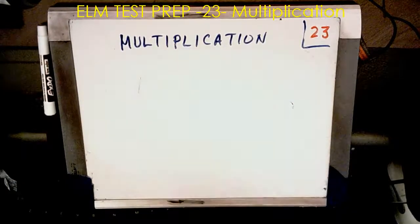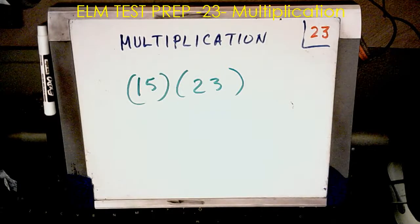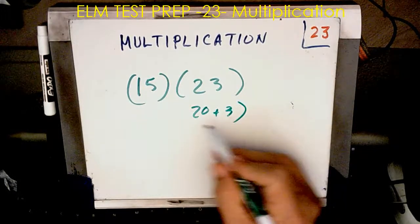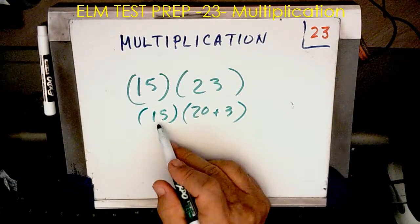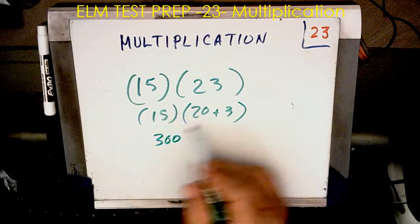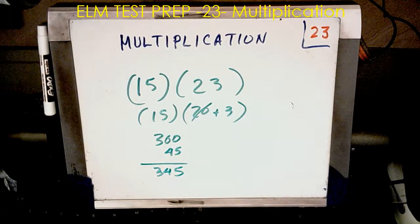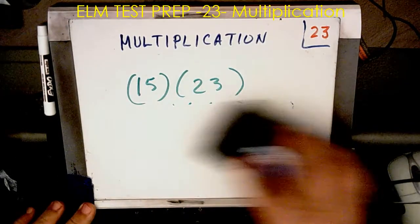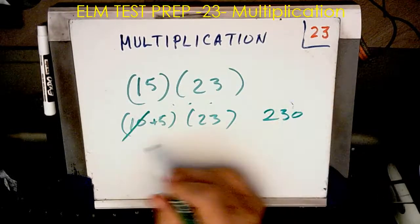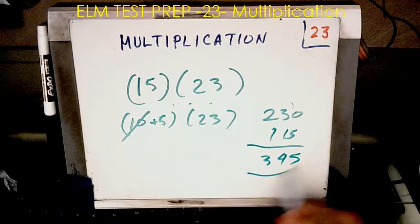How about 15 times 23? Let's do it this way. Let's make this 20 plus 3 times my 15. 20 times 15, that's 2 times 15, that's 30 with an extra 0. So 30 plus the 0 is 300. So I've got the 20 done. 3 times 15, well, that's 45. And there's my answer, 345. So I could have broken it up. I could have said, let's make this 10 plus 5 times 23. 10 times 23 is 230. And then 5 times 23 is really half of that. So half of this would be 15, 115, 345. And again, I have my answer.